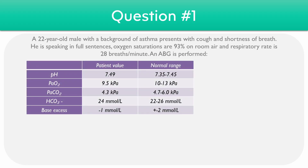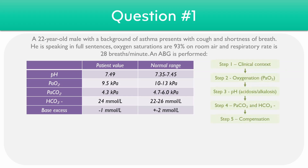If you want, you can pause the video and attempt the question, but to answer it we're going to be working through the five steps. Starting with step one, looking at the clinical context of the situation, the patient has a background of asthma, they have quite a high respiratory rate of 28 breaths per minute, and slightly low oxygen saturations — we're normally targeting greater than 94% on room air.